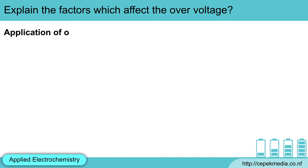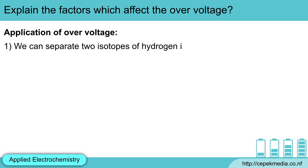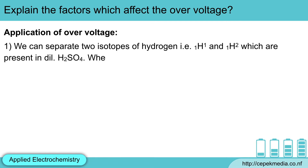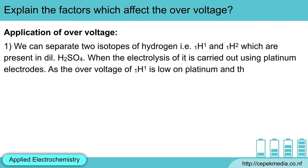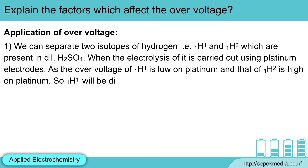Application of overvoltage. First, we can separate two isotopes of hydrogen, that is hydrogen-1 and hydrogen-2, which are present in dilute sulfuric acid. When the electrolysis of dilute sulfuric acid is carried out using a platinum electrode, as the overvoltage of hydrogen-1 is low on platinum and that of hydrogen-2 is high, hydrogen-1 will be discharged first, leaving hydrogen-2 in the solution.